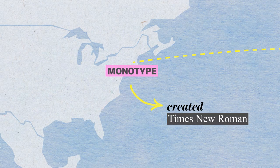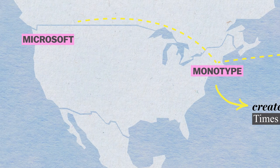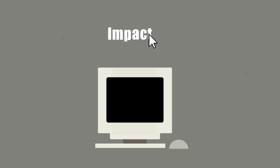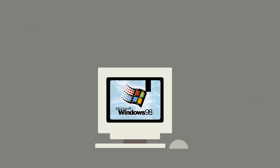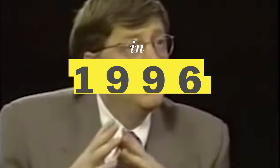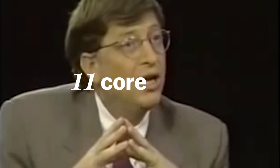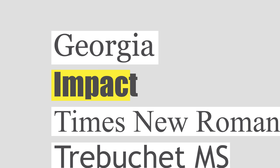They're known for creating Times New Roman, and Monotype in turn licensed fonts to Microsoft. So that's how Impact ended up being included in the Windows operating system, which was starting to dominate the market in the 90s. And in 1996, Microsoft chose 11 core fonts for the web, a free standard font pack that would work across the internet. Impact was one of them.